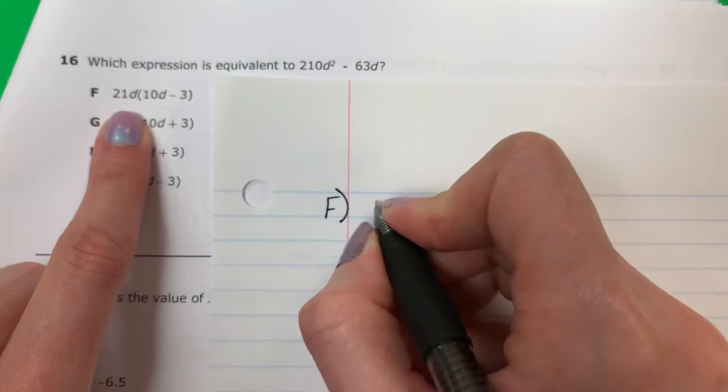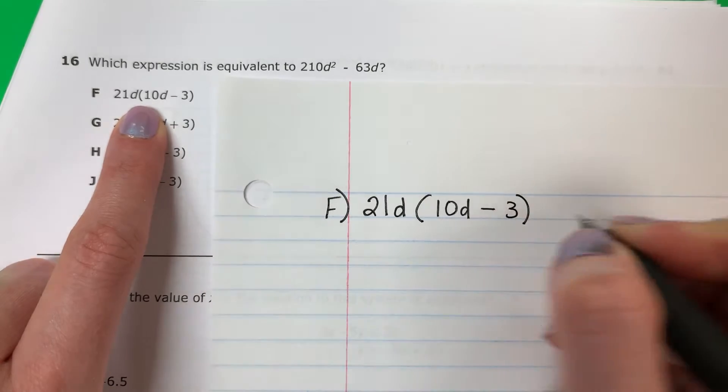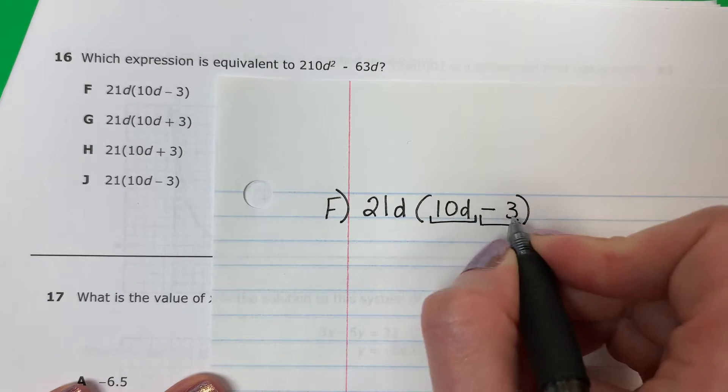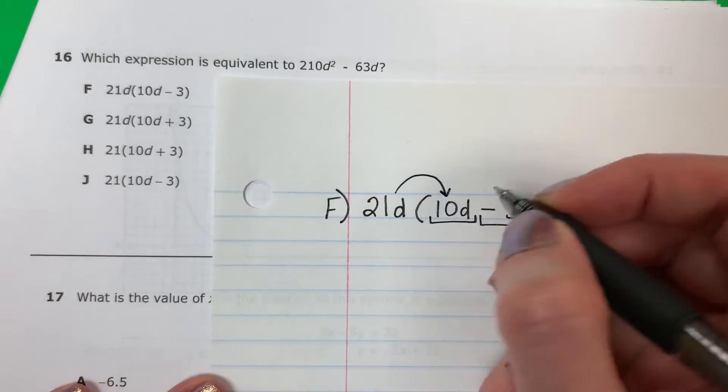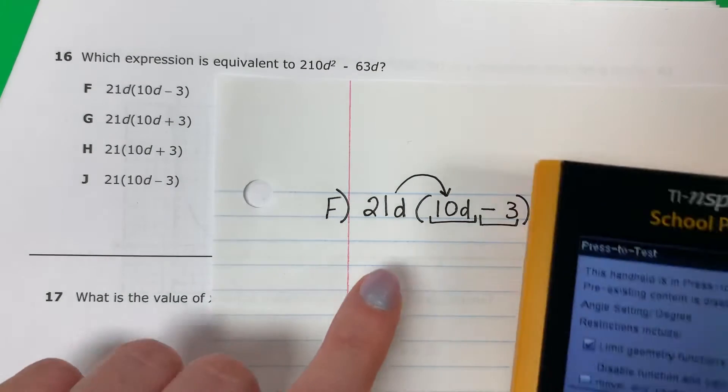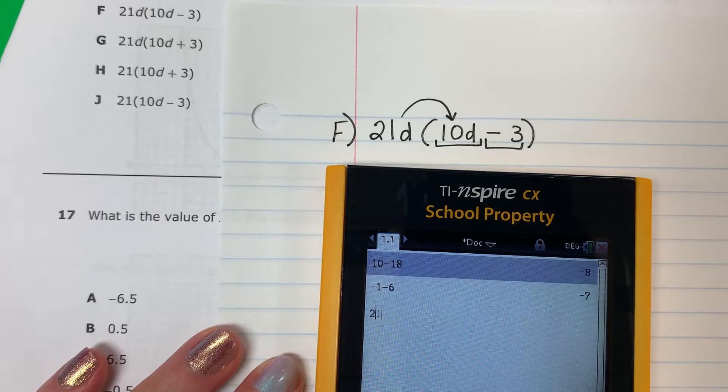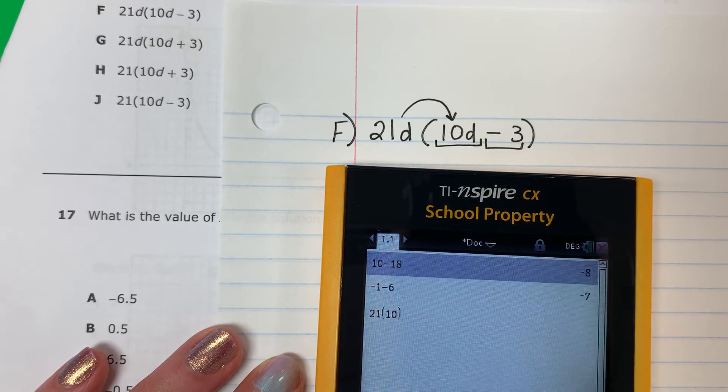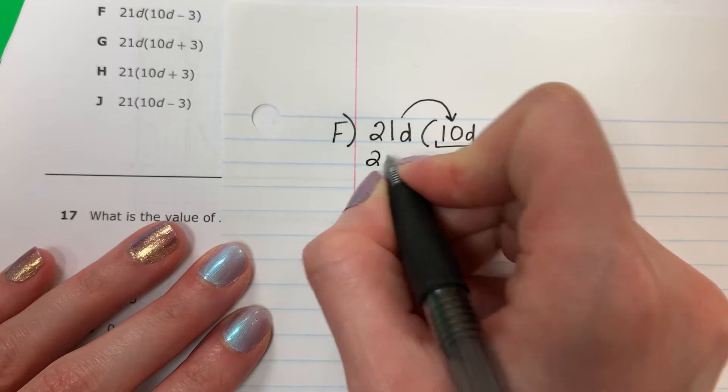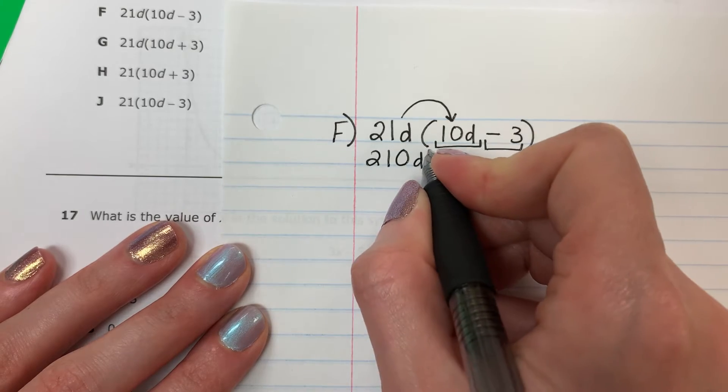So I have 21d, parenthesis, 10d minus 3, parenthesis. Okay, there are two parts. Hay dos partes. Remember this negative is with the 3. Recuerda que este negativo está con la 3. I will do 21d times 10d. So 21 times 10, 21 por 10, that's 210. Copy D. Look, I have two Ds. Mira, tengo dos Ds. One, two. So that will be squared. Cuadrado.